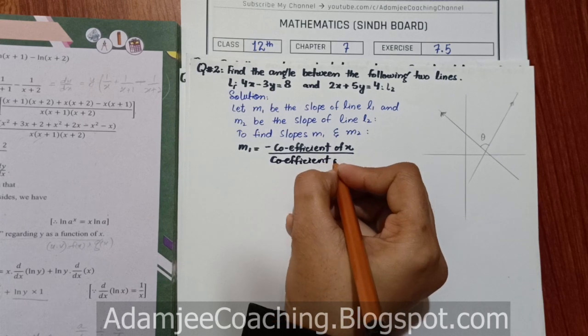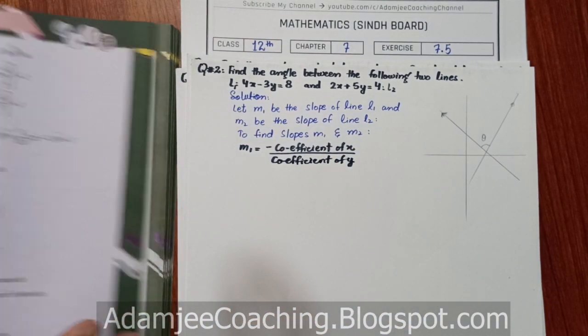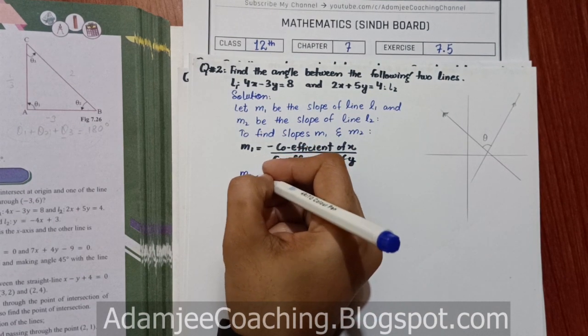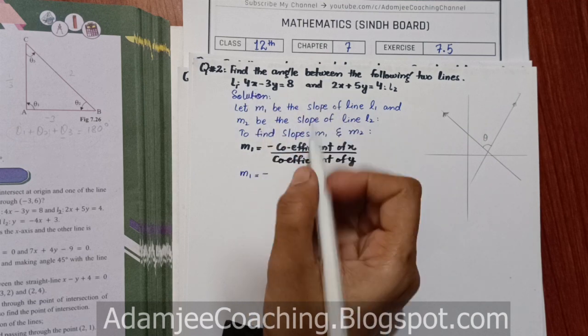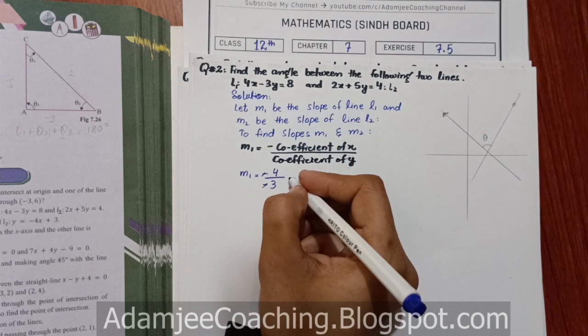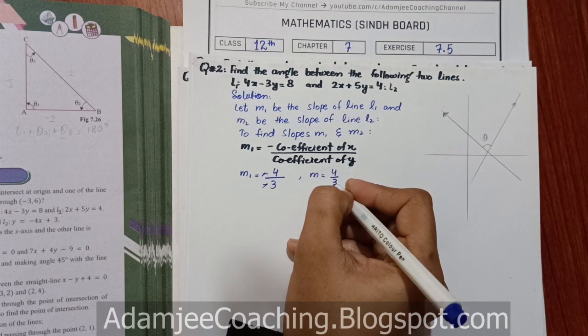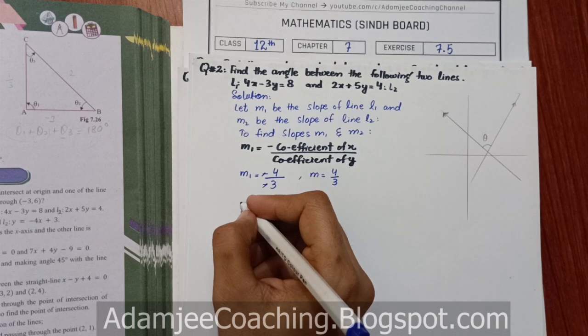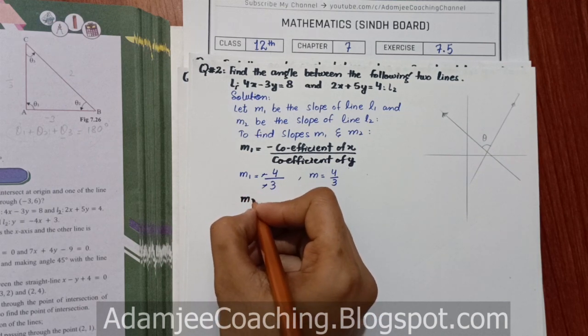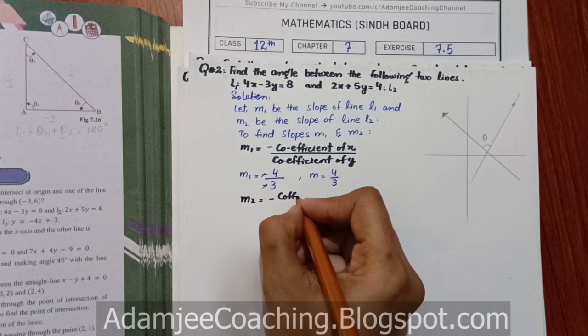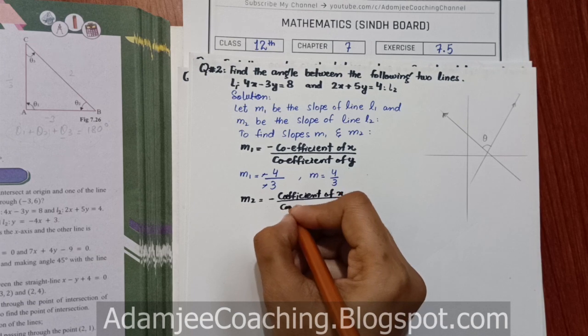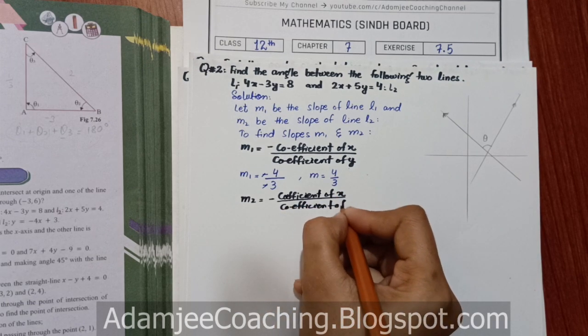This is simple. If you have a line, you can find the slope. With the help of this formula, you can easily find out M2: minus coefficient of x divided by coefficient of y.